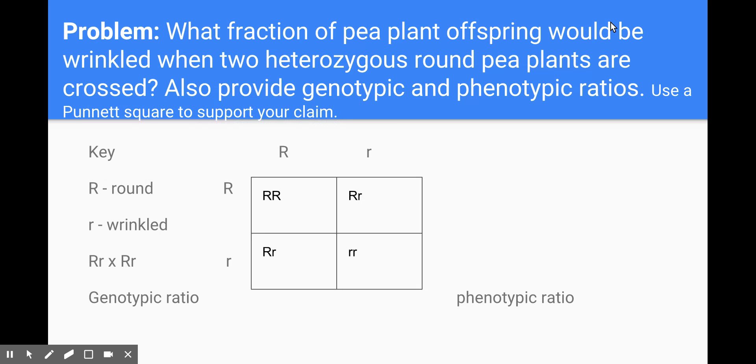Here's our problem that we're going to start looking at first to help us understand this concept. What fraction of pea plant offspring would be wrinkled when two heterozygous round pea plants are crossed? Also provide genotypic and phenotypic ratios. Use a Punnett square to support your claim.